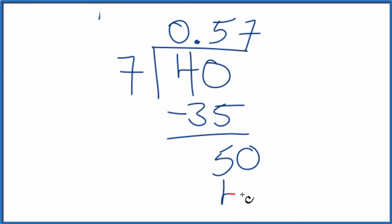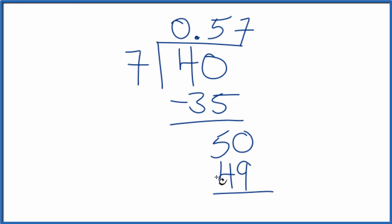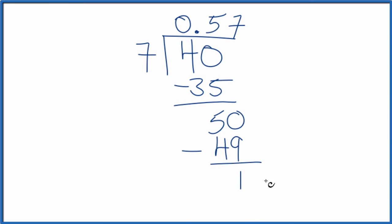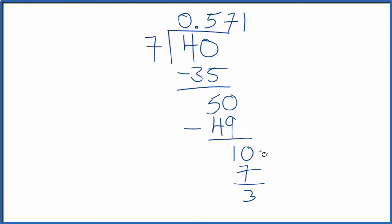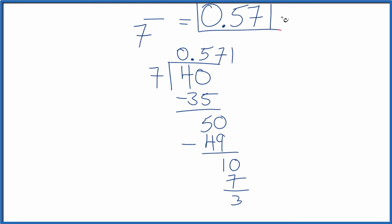7 times 7, that's 49. So we're getting close. That just gives us 1. Call it 10 and move over 1. 7 goes into 10 one time, and you can keep going for a while with this here. So let's stick with 0.571.